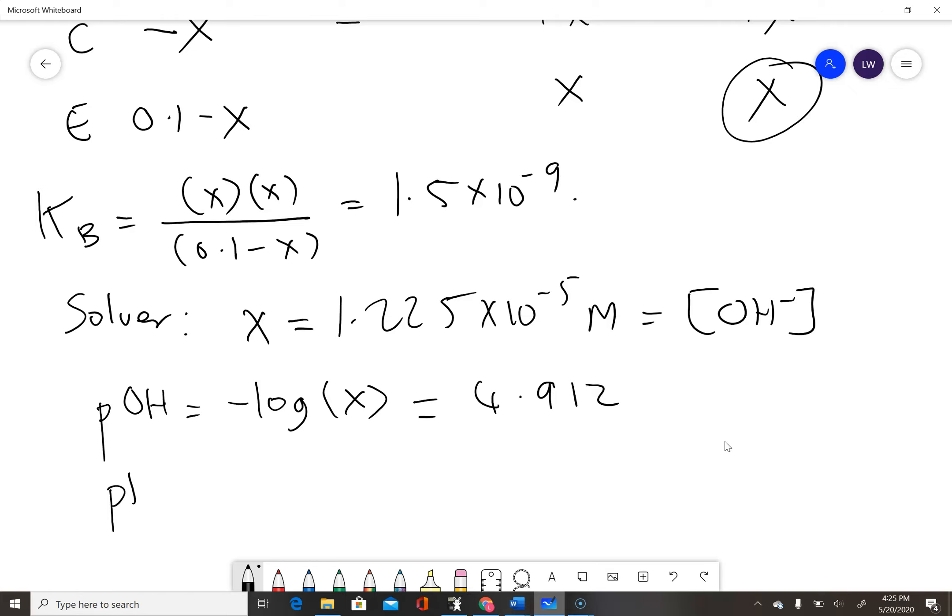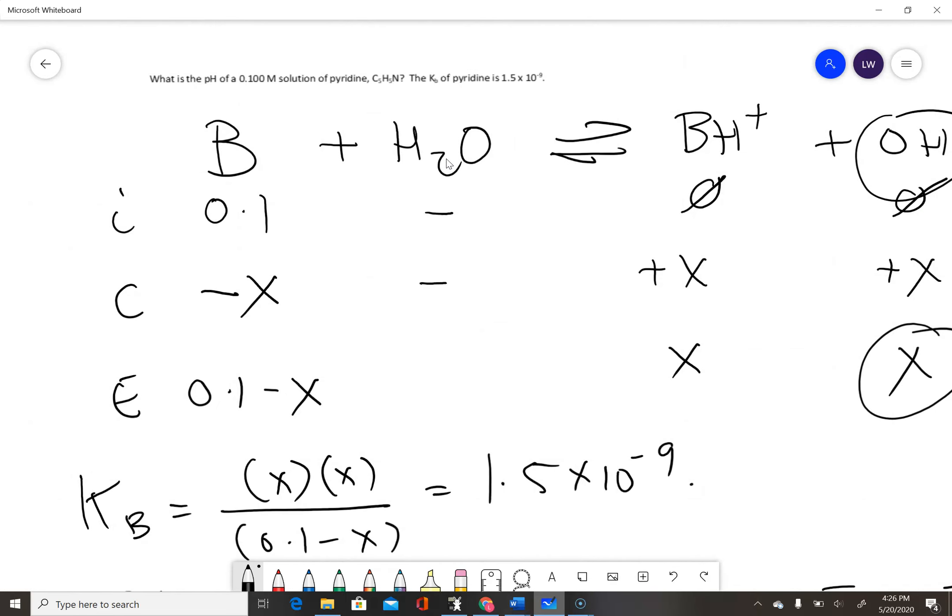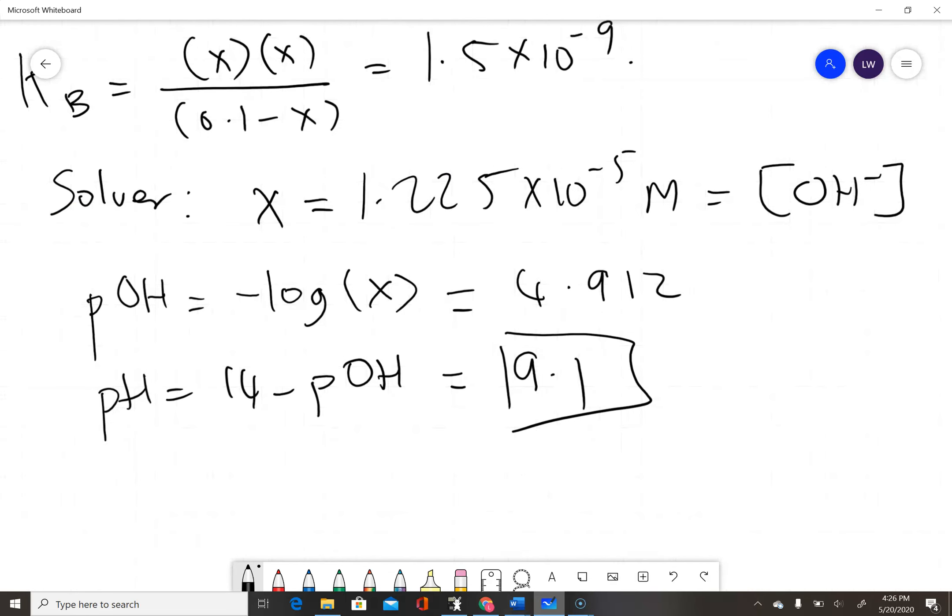pH equals 14 minus the pOH. So 14 minus 4.912 gives me a pH of 9.1. Let me check that's what the question asked for. Yes, it asks for the pH. We're done.